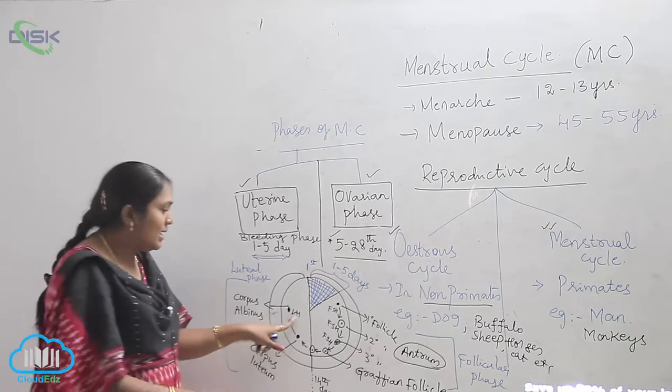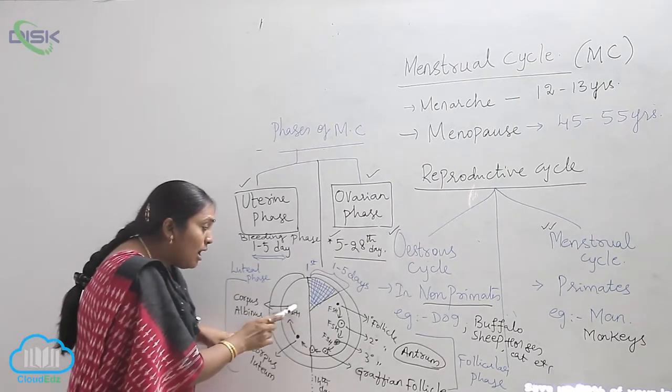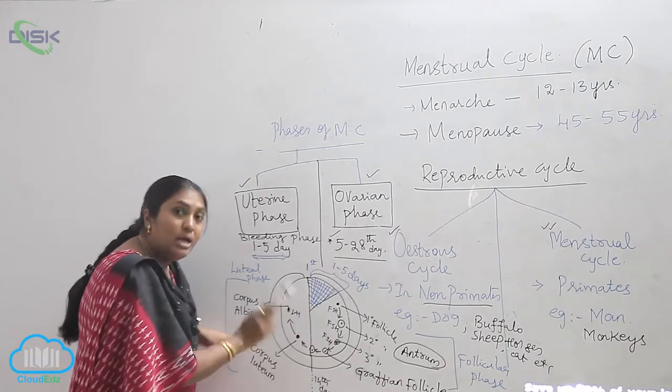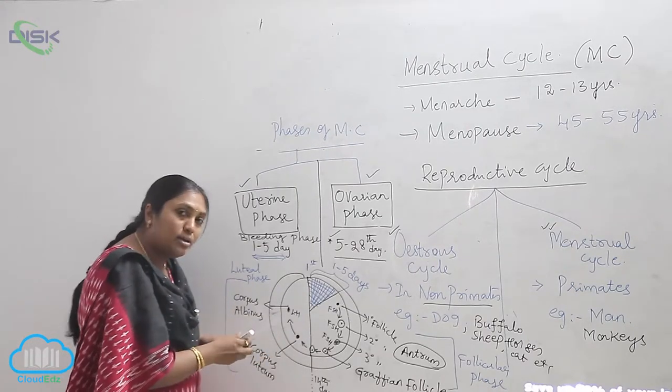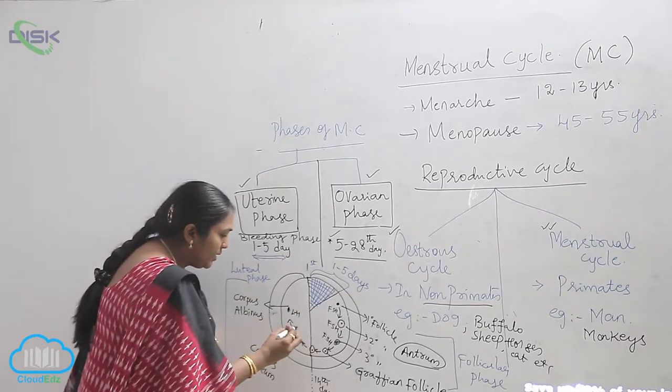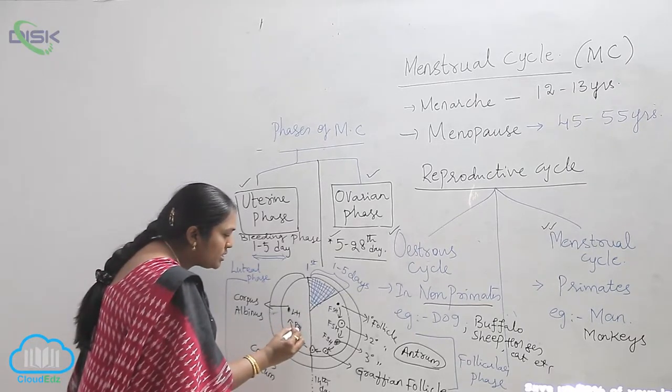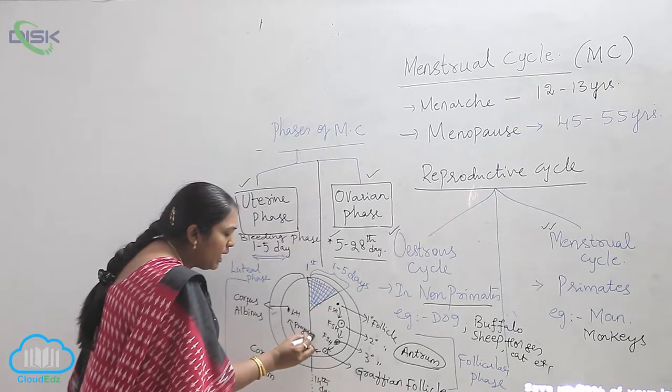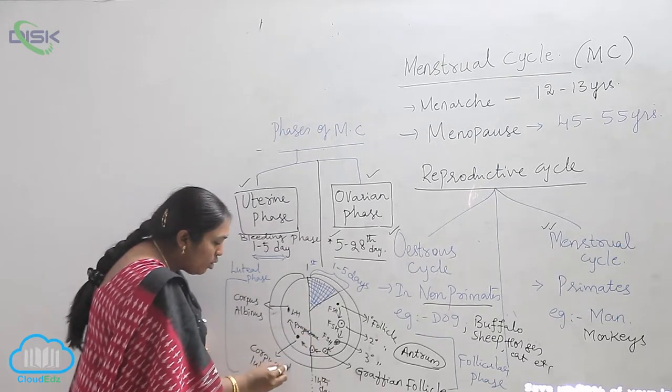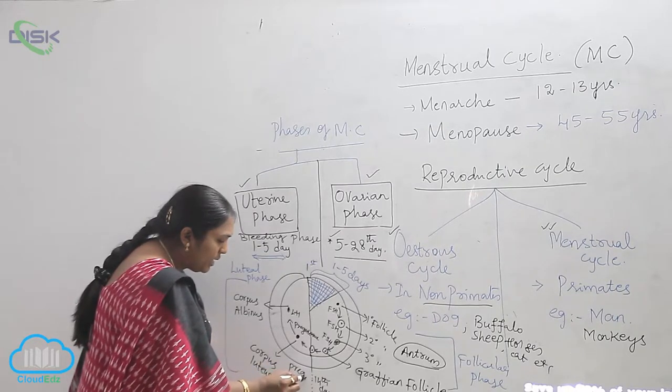Now pause here. The luteinizing hormone will play a role if fertilization does not occur. If fertilization occurs, what is the hormone which is responsible? That is called progesterone. Progesterone is the hormone which will occur in maintaining pregnancy in females.